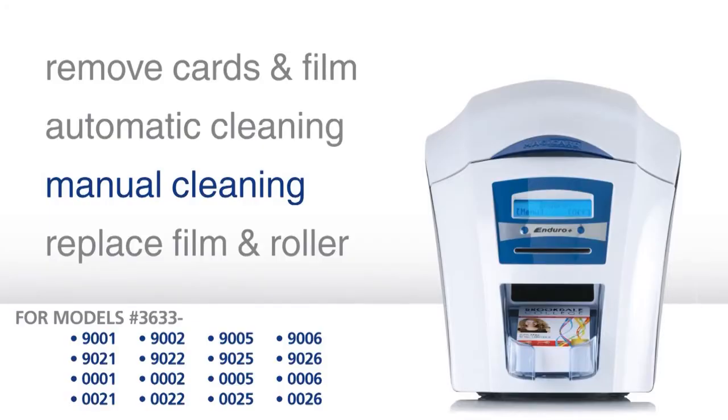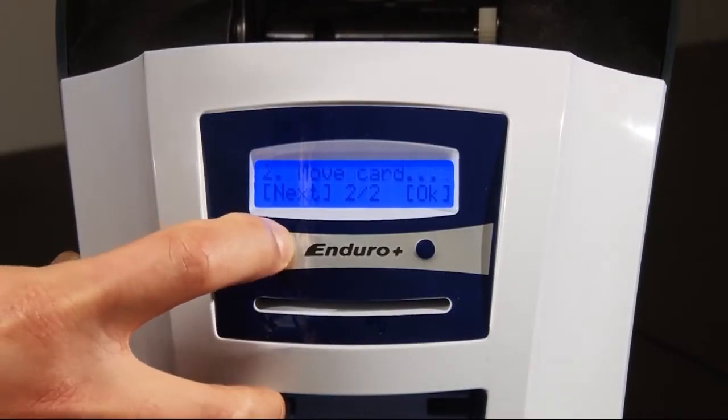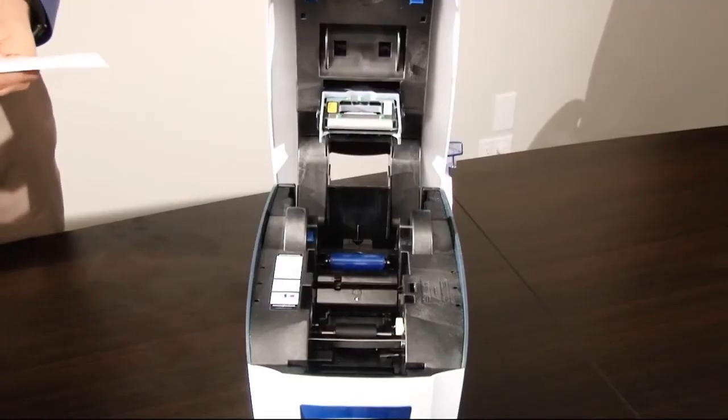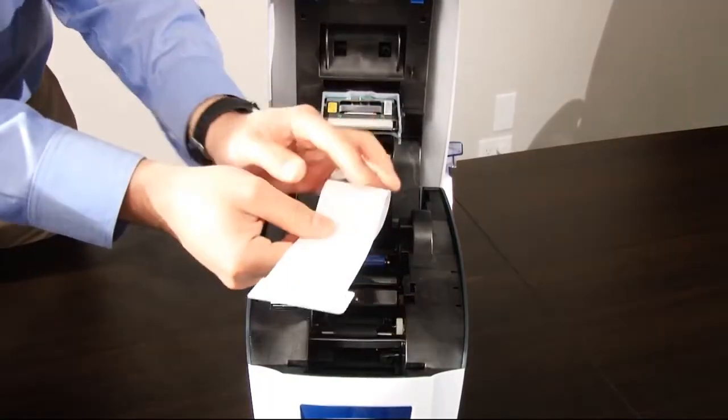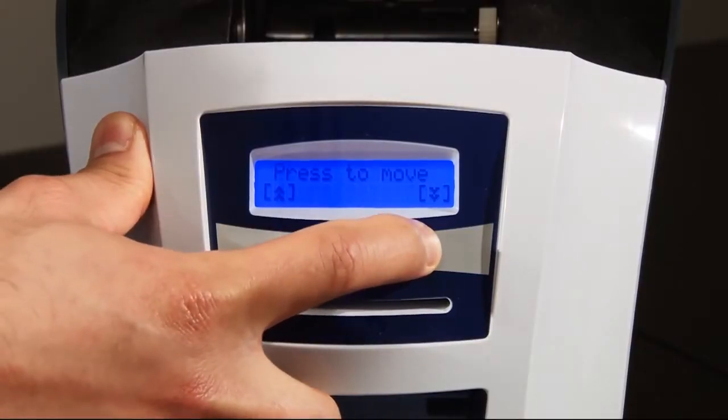After heavy use, the printer rollers may require manual cleaning. Leave the automatic cleaning mode and select move card from the main menu. Fold the cleaning card in half and press it onto the main middle roller while holding down one of the move card buttons.